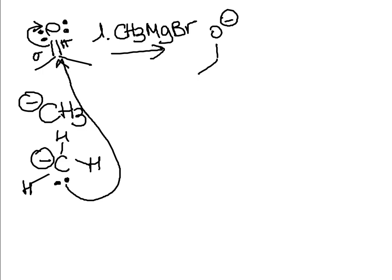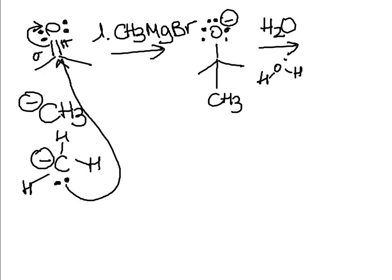After step one, I have an O-minus with three methyl groups connected — the two original R groups plus the CH3 that attacked. The second step is water. Here I have an excess of electrons on the oxygen, so this is now my base and water is my acid — water can be both an acid or a base. My electrons come and pick the hydrogen from water, and the electrons go to the oxygen of water. What I end up with is an alcohol.